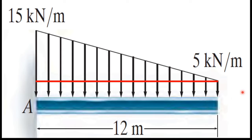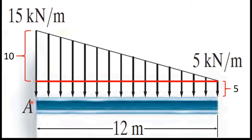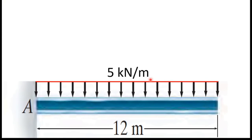First I consider the bottom part. The distributed load value gives us a height of 5 kN/m. With the overall height being 15 and this bottom part being 5, the remaining top height comes to 10. The bottom part is a uniformly distributed load with an intensity of 5 kN/m and the length is 12 meters.